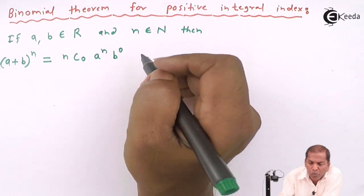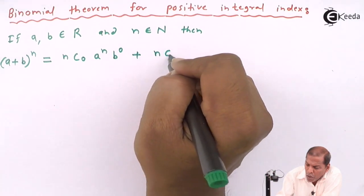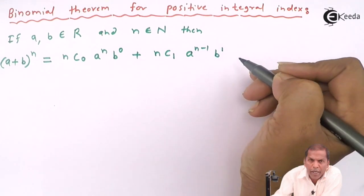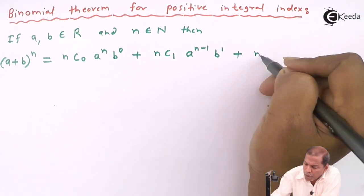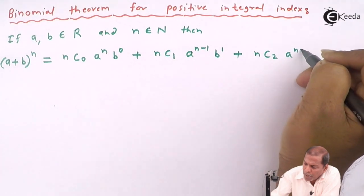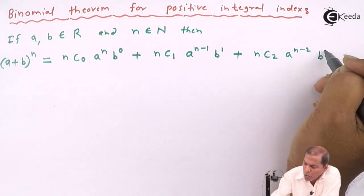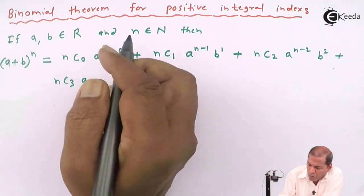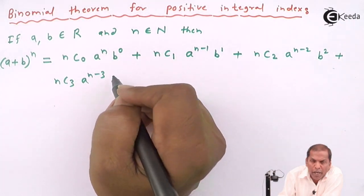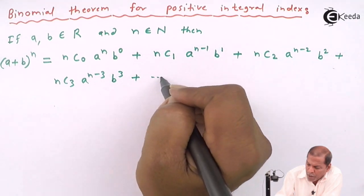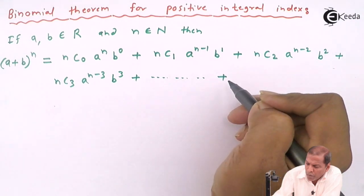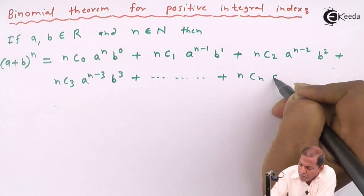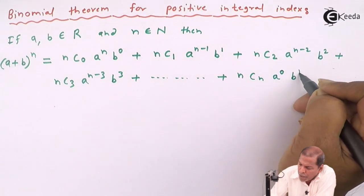...nC1 a^(n-1) b^1 plus nC2 a^(n-2) b^2 plus nC3 a^(n-3) b^3, and so on. Finally, the last term is plus nCn a^0 b^n.